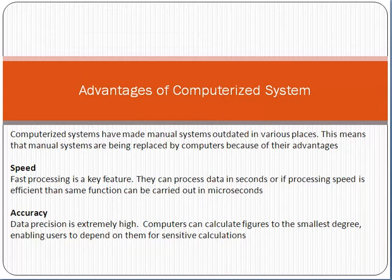The accuracy of data and processing is extremely high. Computers can calculate figures to the smallest degree, enabling users to depend on them for sensitive calculations. For example, if you are working in any office and use a computerized system, the accuracy would be much higher compared to human processing.